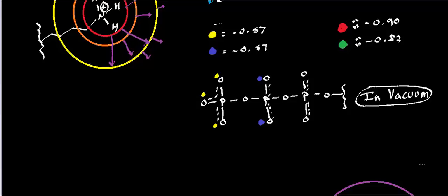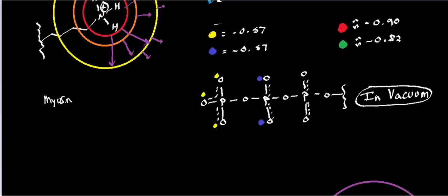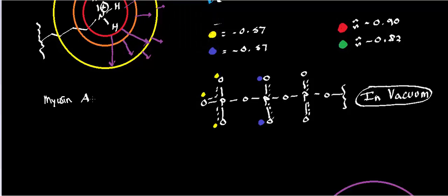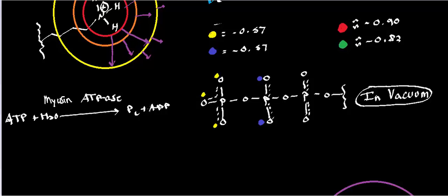What is myosin ATPase? It's actually a contractile protein in your muscles that results ultimately in movement of the whole muscle fiber and produces muscle contraction. As the name suggests, what it's going to do is take adenosine triphosphate and water and hydrolyze it into inorganic phosphate and adenosine diphosphate. That's the net reaction of this enzyme myosin ATPase.